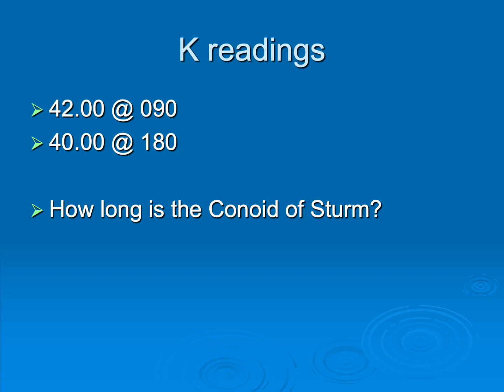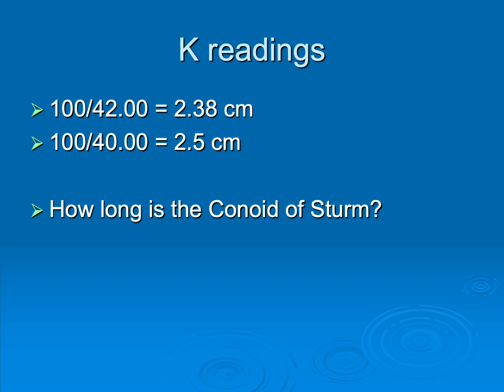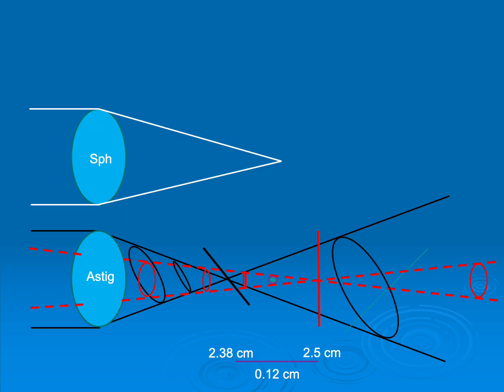Going back to our K-readings with two diopters of astigmatism — how long is the conoid of Sturm? We take the power in diopters and divide it into 100 to get the length in centimeters. So 42 diopters gives 2.38 cm, and 40 diopters gives 2.50 cm. The length of the conoid of Sturm is the difference between those two values: 0.12 centimeters. The longer the conoid of Sturm, the more blurry it is for your patient — so we want as little difference as possible between those two K-readings.